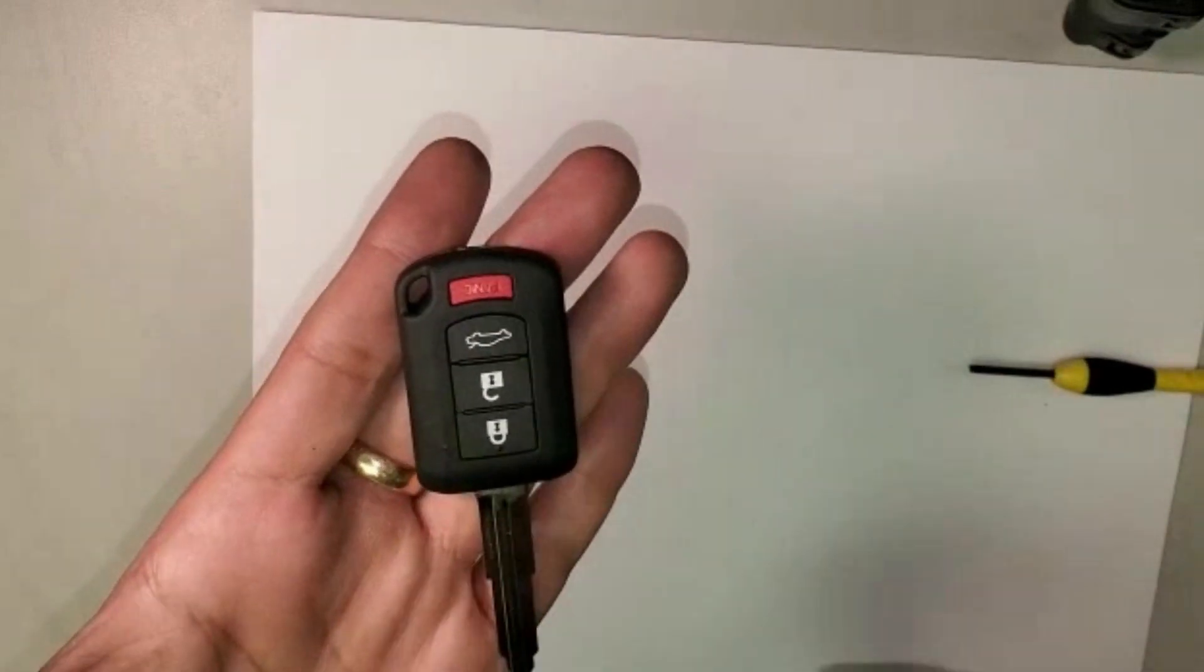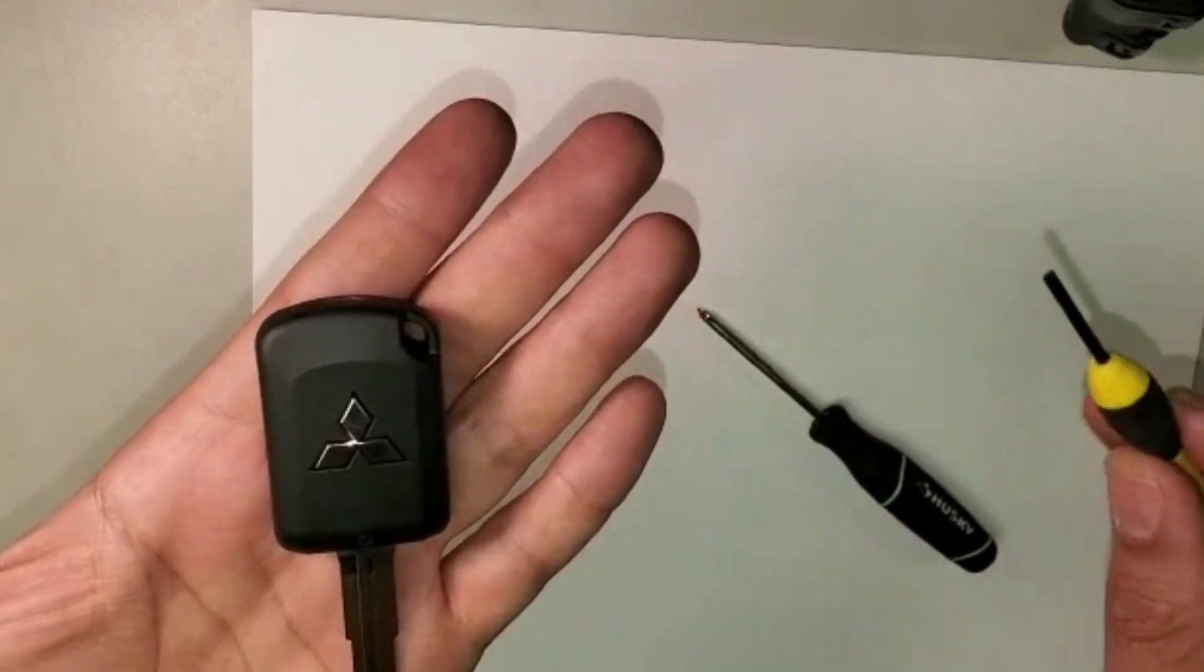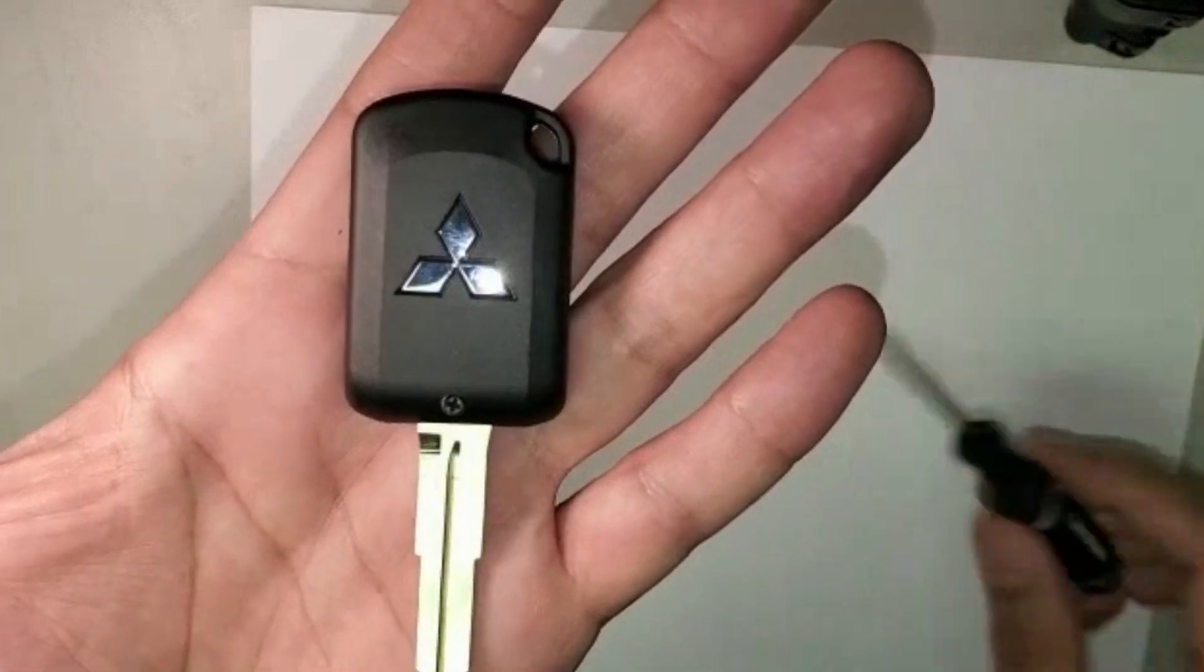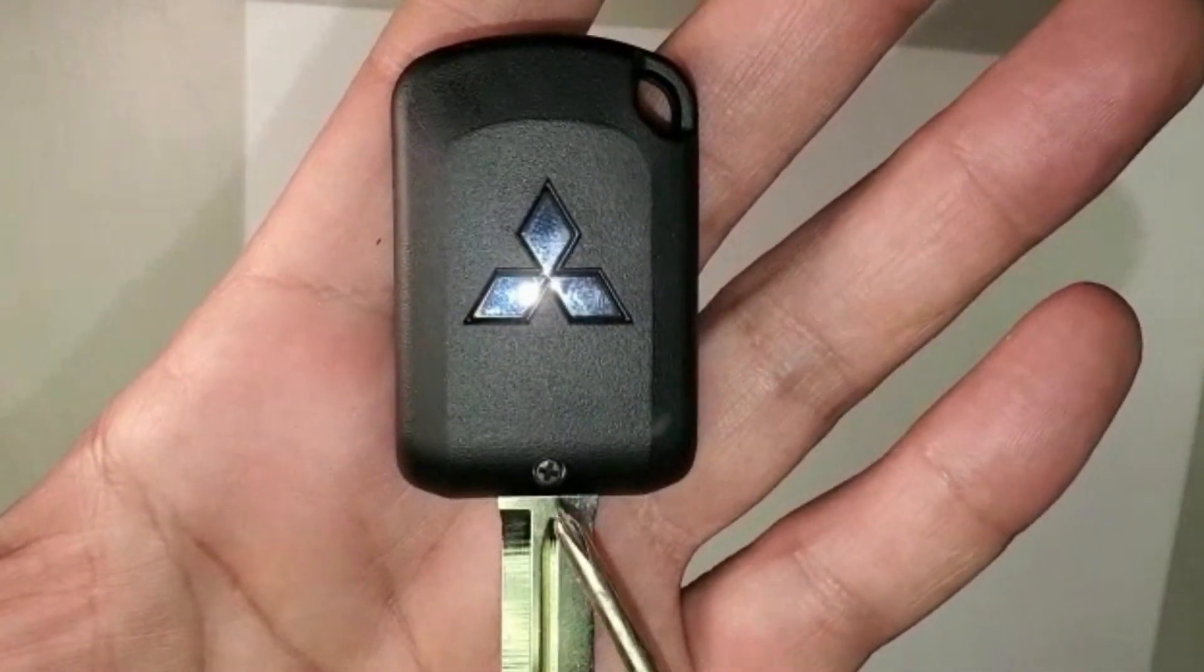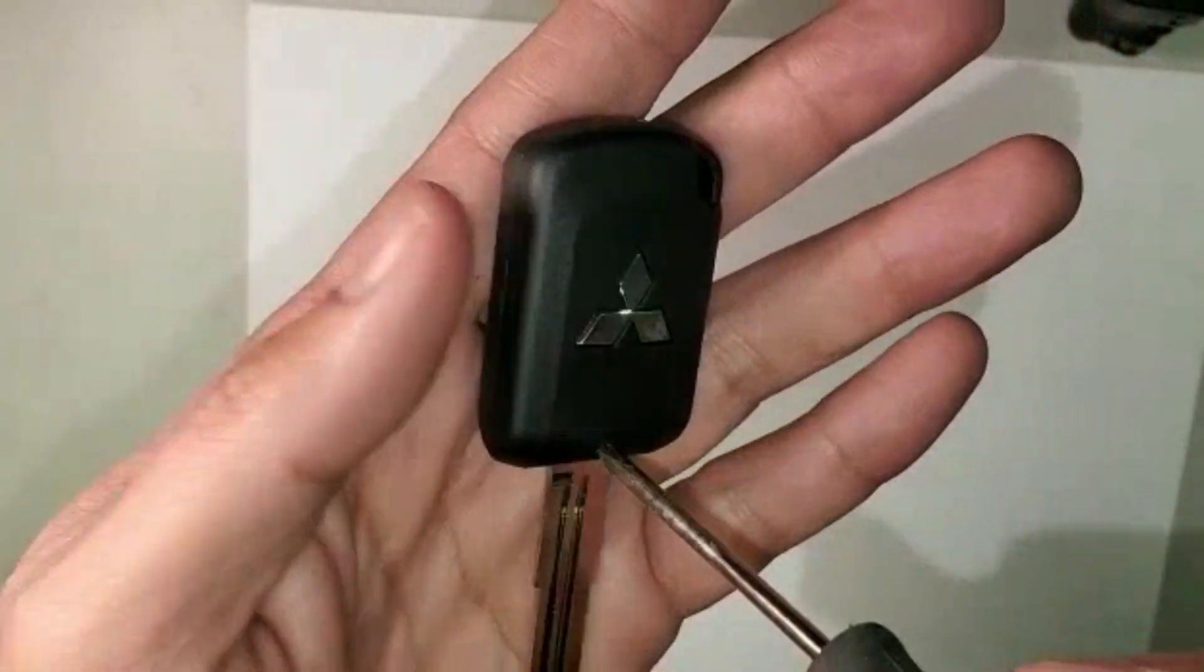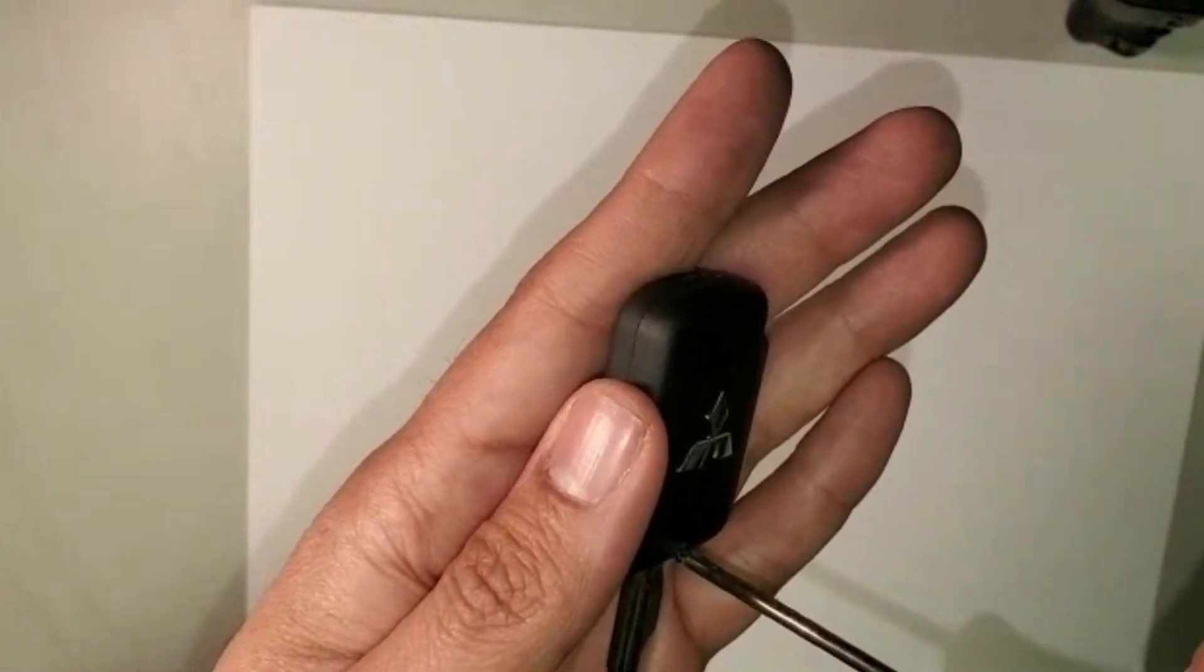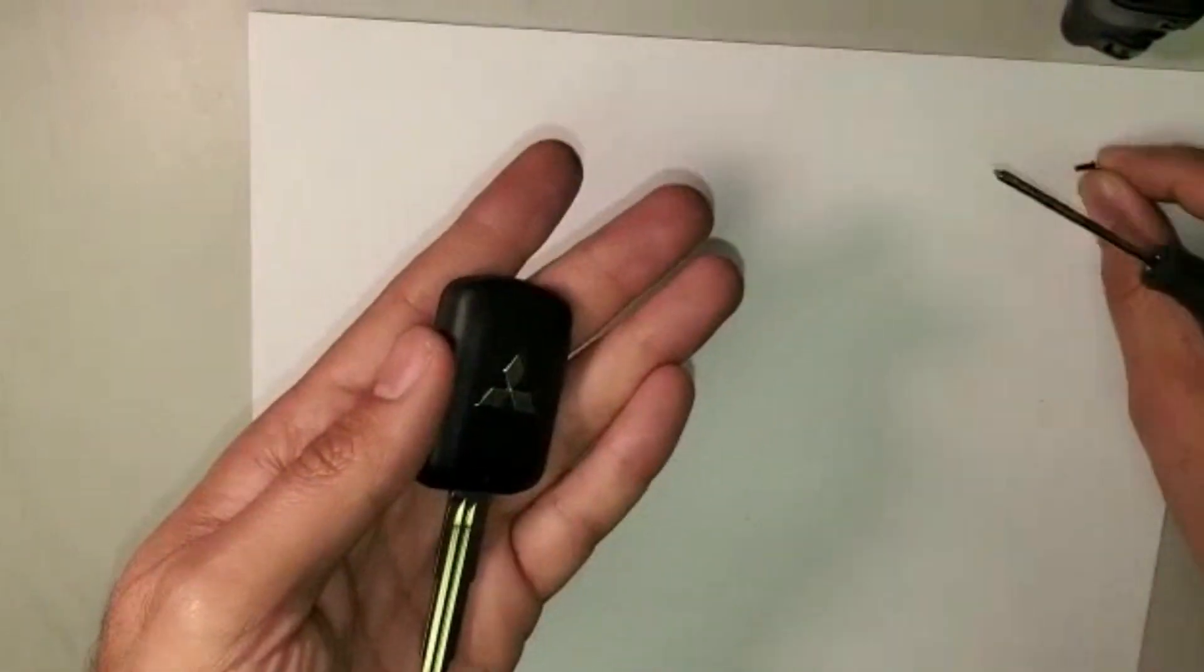Very easy. All we need is a small screwdriver and a flathead. Let's start now. First thing, we have to take this screw right here. I'll take it closer, and with the screwdriver I simply take it out. I'll put it aside.